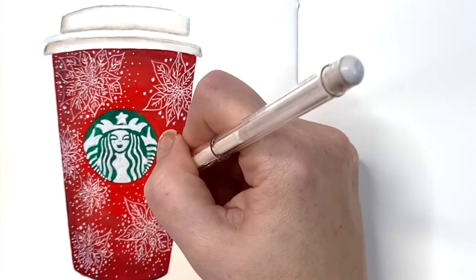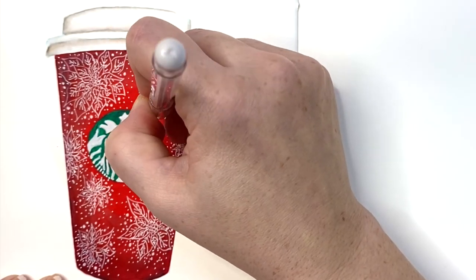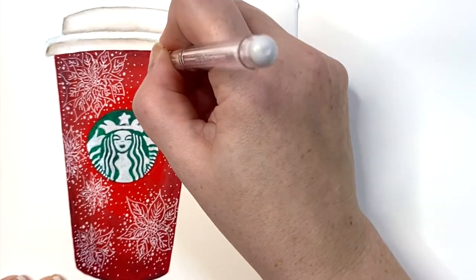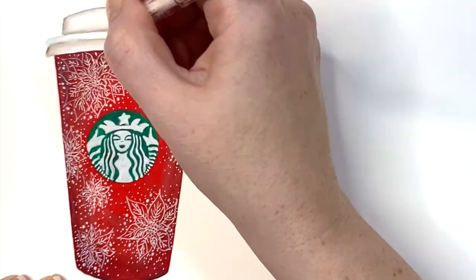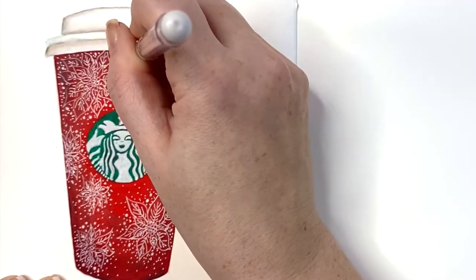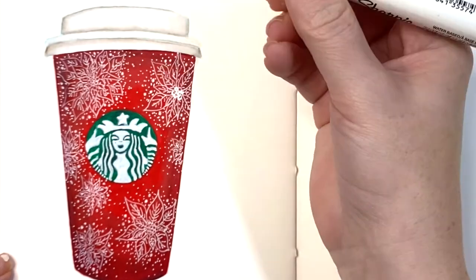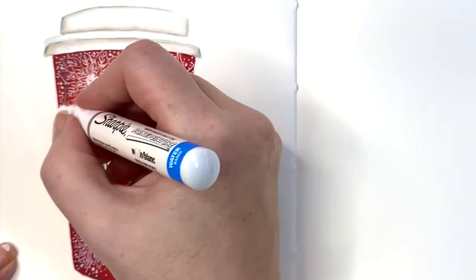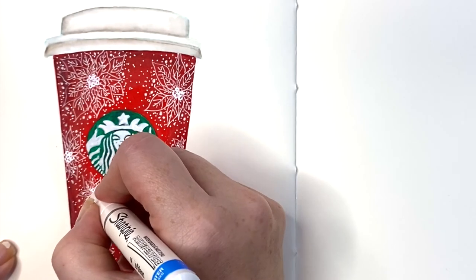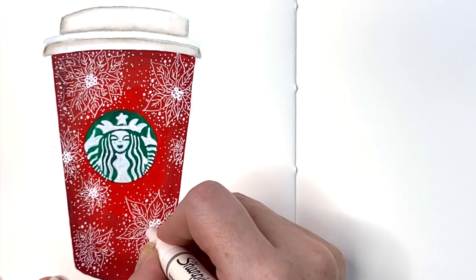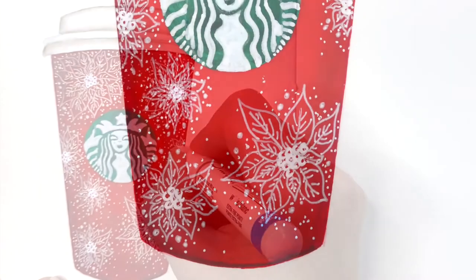And you can see that the cup really comes alive with all of these little bits. Then to add a last bit I wanted to go ahead and really emphasize the center of those flowers. So I came back in with my thicker Sharpie pen so you could see those centers really pop out.